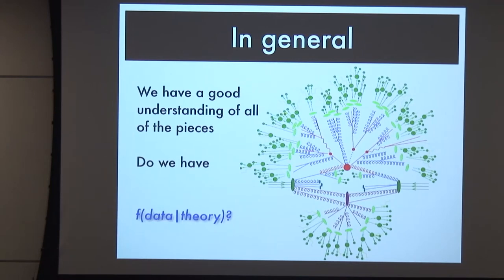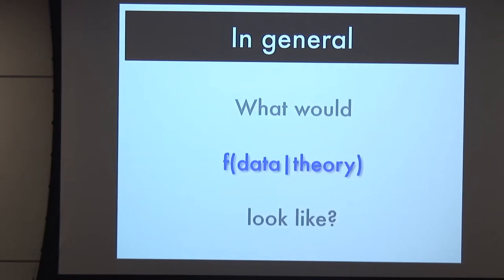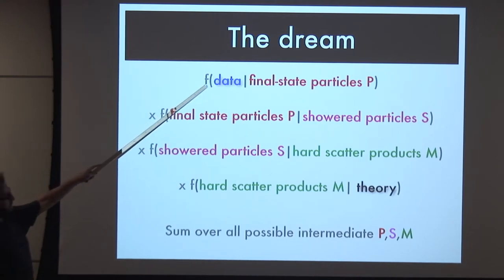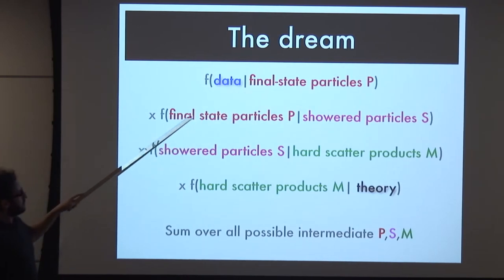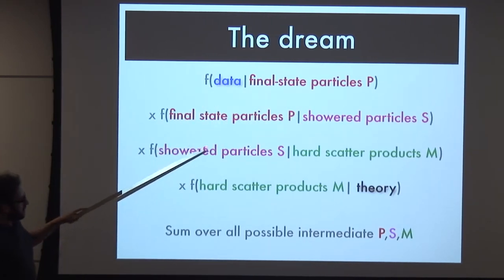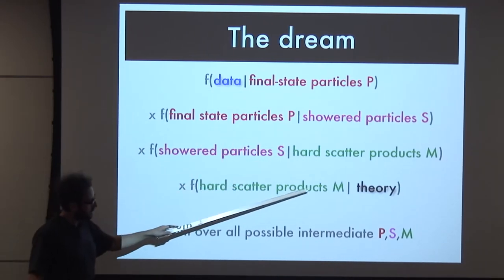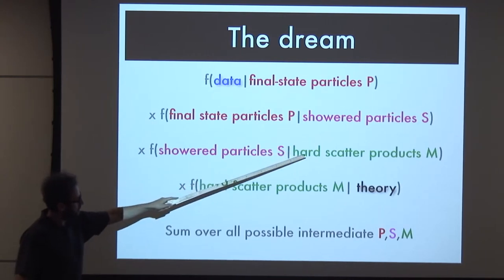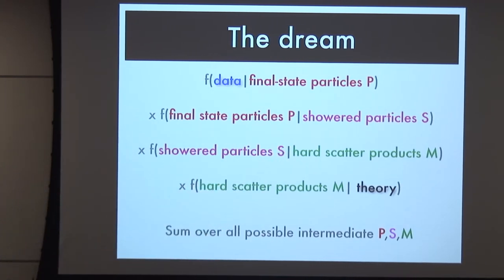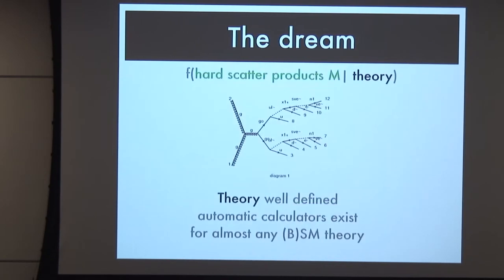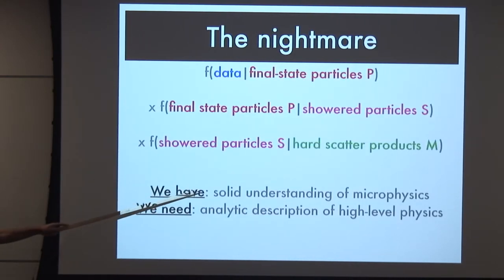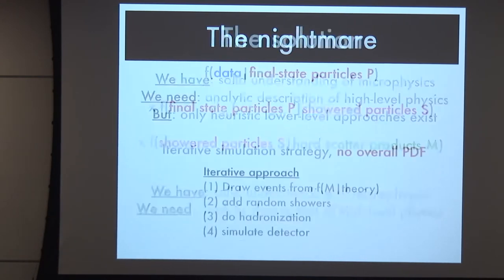In general, though, we don't have this for particle physics because there are so many complicated pieces. We need to write the probability of seeing data given some final state particles, the probability of producing those given showered particles, the probability of seeing those given hard scatter products, and the probability of producing hard scatter products given some theory. Because these intermediate states - showered particles, hard scatter products - are unobserved, we need to sum over all possible configurations. This part is actually pretty well understood; we have automatic calculators for it. But while we have a solid understanding of the microphysics, we don't have an analytic description of the high-level physics, and this is really the problem.